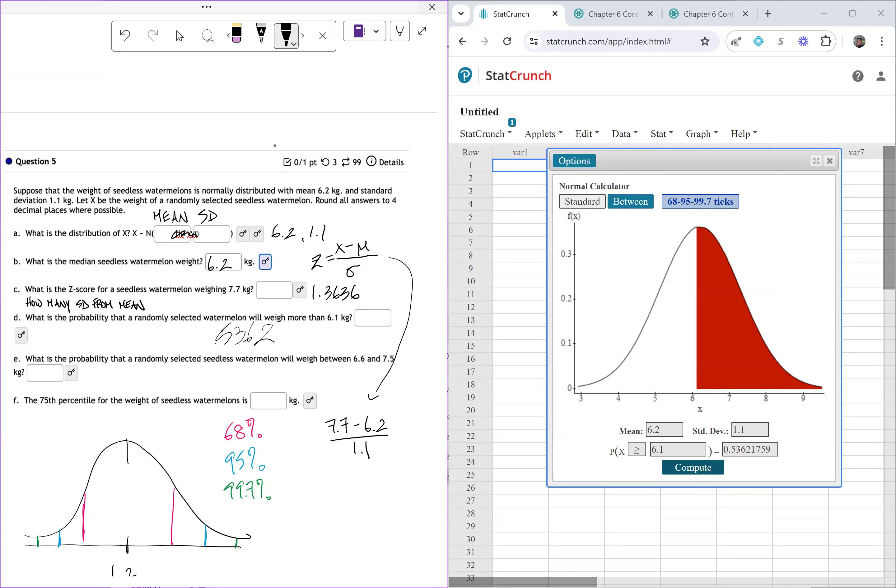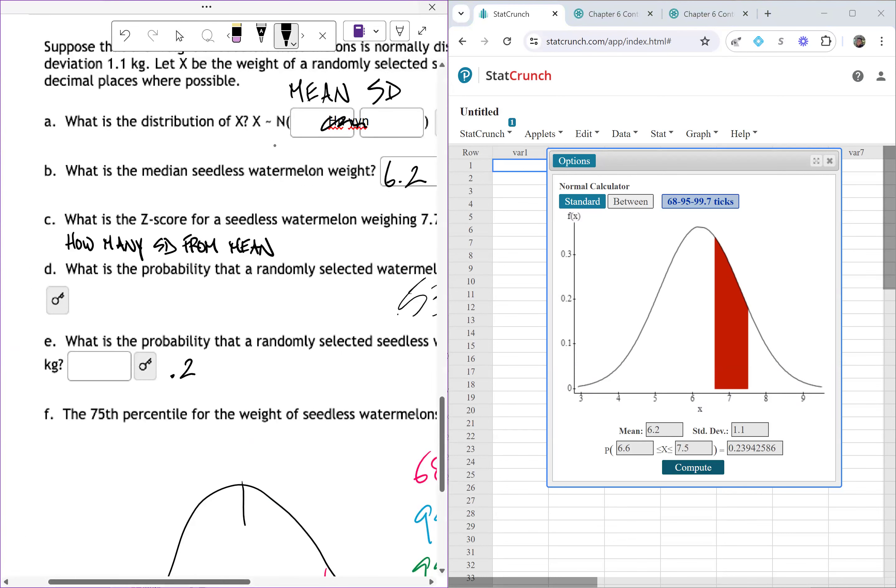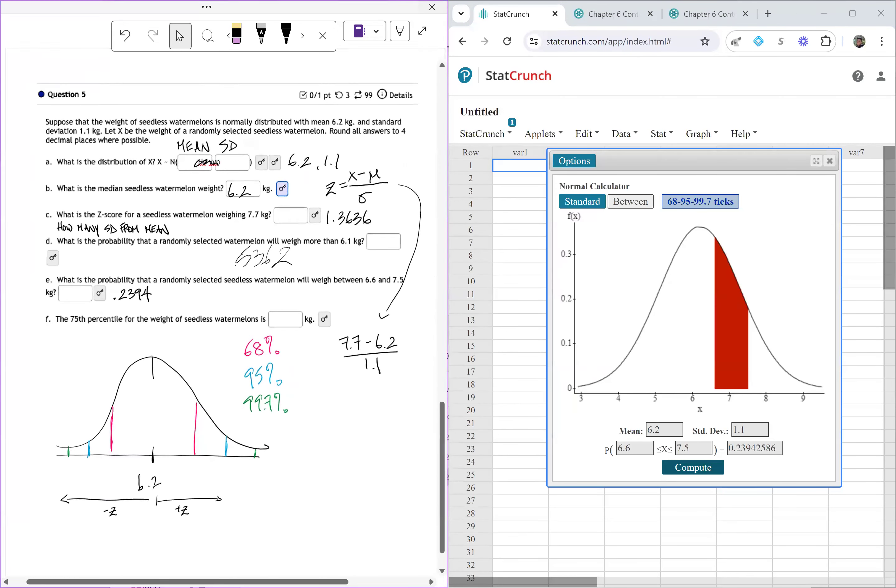Part E, what is the probability that a randomly selected seedless watermelon will weigh between 6.6 and 7.5 kilograms? The between means I need to click the between button on the calculator for StatCrunch. And I want to be between, not between negative one and one, but I want to be between 6.6 and 7.5. And I click compute. So we can see that we're looking at a slice that's between 6.6 and 7.5, and the probability that a randomly selected watermelon will weigh somewhere in that red zone is 0.2394. So about a 23 or 24 percent chance that this is going to happen.